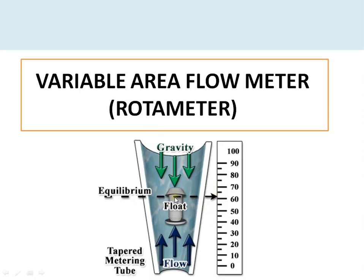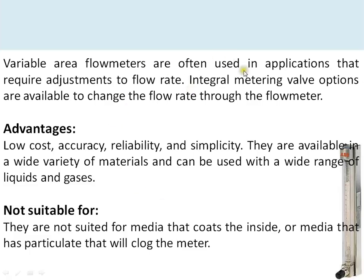The position of the float is clearly visible from outside the rotameter. In applications where the transparent glass tube cannot be used — because the operating pressure may be high, or the moving fluid may not be compatible with glass — metal tube rotameters are used. In a metal tube rotameter, the position of the float is not visible to the operator; instead, the movement of the float is transferred to an indication using a magnetic and mechanical arrangement.